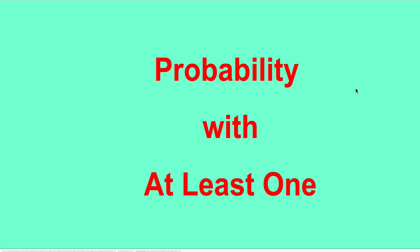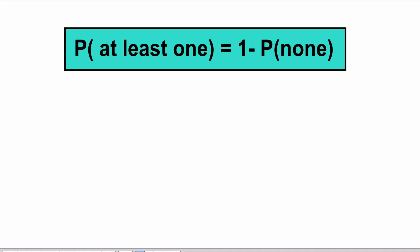In this lecture we're going to talk about probability with the keyword 'at least one.' The probability of at least one is always equal to one minus the probability of none. We will break this down in a couple of examples to see how it works out.